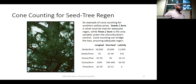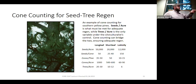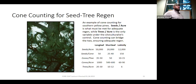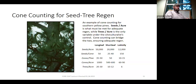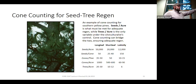Then you stand with binoculars about a tree height away from the tree and count the cones. You're trying to count the green closed cones — why not the brown open cones? They've already dropped their seeds. In longleaf, when you go out there in a cone year, you'll have these green one-year-old cones that will open and drop seed the following year.